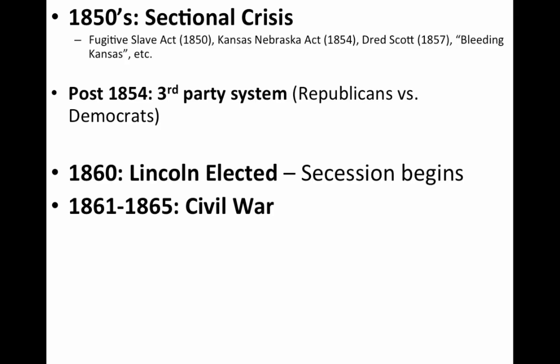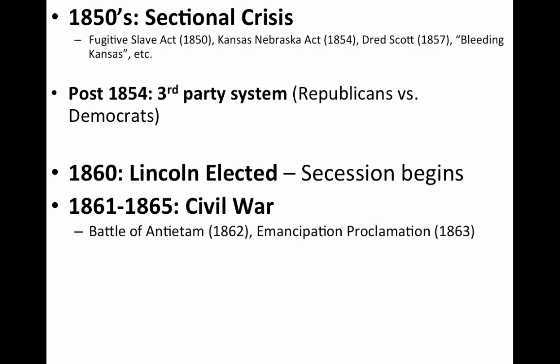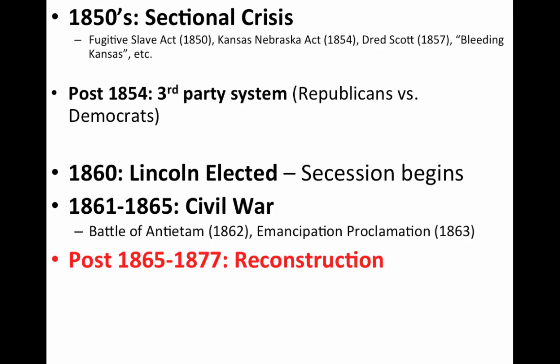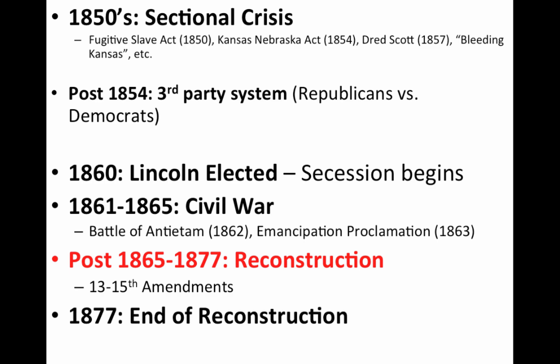Following Fort Sumter, the Civil War takes place from 1861 to 1865. Key dates include the Battle of Antietam, important both militarily and because it leads to Lincoln announcing the Emancipation Proclamation. During the war, even before it ends in 1865, you have Reconstruction — the process of bringing the Union back together and dealing with a post-slavery America. You're going to get some very important amendments: the 13th, 14th, and 15th. But Reconstruction will be a temporary revolution — in 1877, it comes to an end.